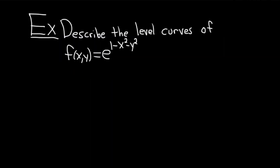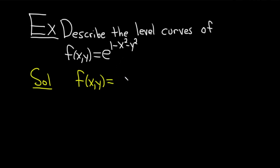Let's finish up with an interesting example. Describe the level curves of f of x,y equals e to the 1 minus x squared minus y squared. Recall that the level curves are the curves that satisfy the equation f of x,y equal to a constant. You can use any letter you like — I'm going to use c. In these problems where you have to find the level curves, always start with this equation: take your function and set it equal to c. So we have e to the 1 minus x squared minus y squared equal to c.